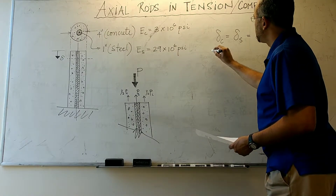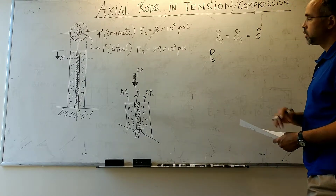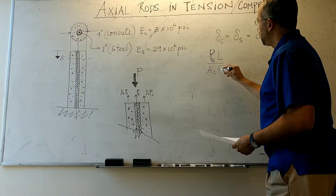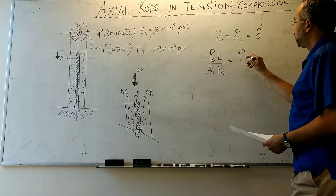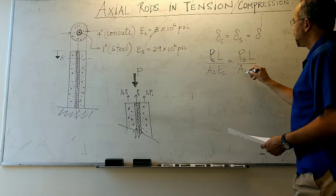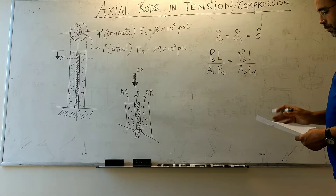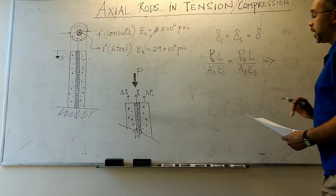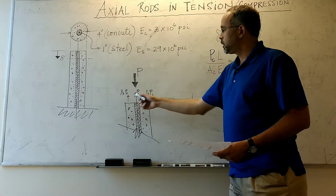Using the basic formula for deformation of a rod in tension or compression, we write: the deformation in concrete equals the load going to the concrete times the length, divided by the area of concrete times the elastic modulus of concrete. This must equal the load carried by the steel times the length, divided by the area of steel times the elastic modulus of steel.